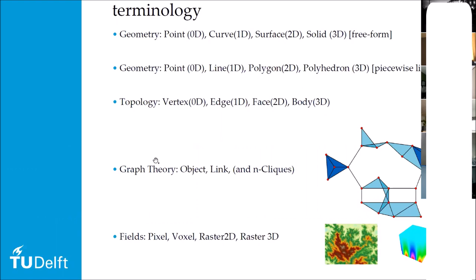A reminder about terminology: I want to sharpen the terminology around graph theory. When we are in different contexts — mainly the context of geometry, topology, or graph theory — we have to use different terms when referring to objects of certain dimensions. In a geometrical context we talk about points and curves. In piecewise linear geometry we speak of points, lines, polygons, and polyhedra. In the context of topology we usually speak of vertices, edges, faces, and bodies, and their higher-dimensional analogues.